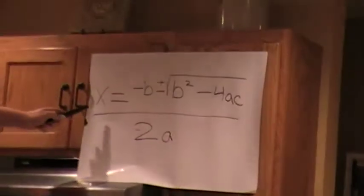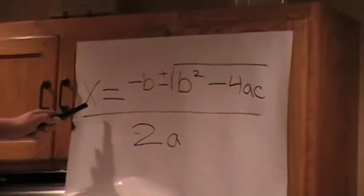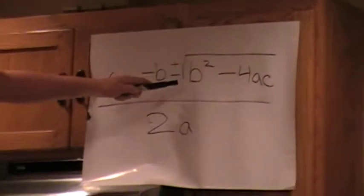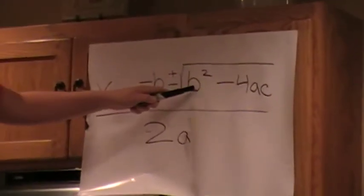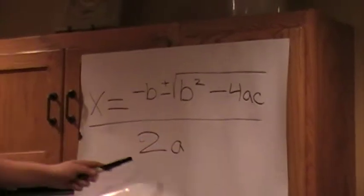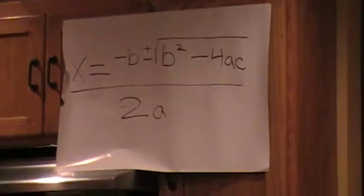Okay class, we're on a quadratic wave today. We're going to start: x equals negative b plus or minus square root of b squared minus 4ac, all over 2a. Okay, it's very hard. I'll talk to you tomorrow.